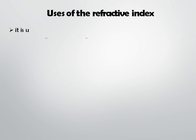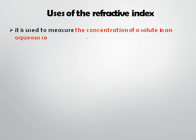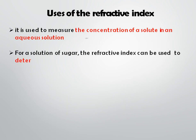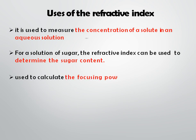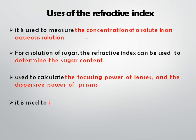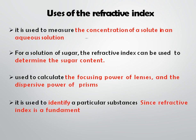Uses of refractive index: it is used to measure the concentration of a solute in an aqueous solution. For a sugar solution, it can determine the sugar content. It is also used to calculate the focusing power of lenses and dispersive power of prisms. Since refractive index is a fundamental physical property of a substance, it is used to identify particular substances and to check purity.